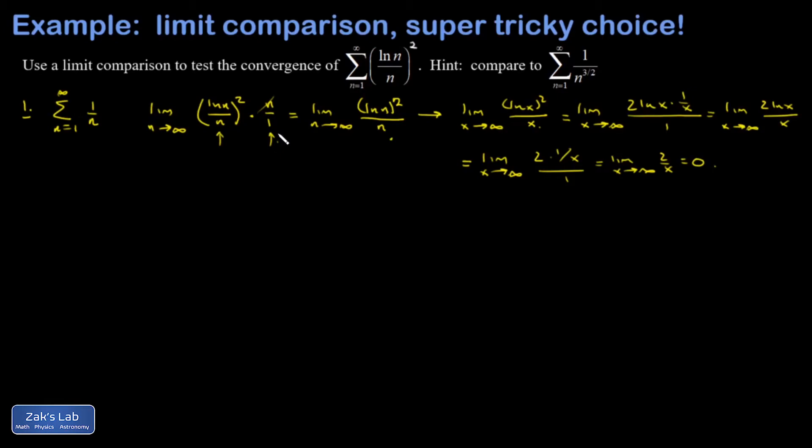This is essentially saying that the terms in our series are smaller than the terms in a divergent series. That doesn't tell us anything because being smaller than infinity doesn't necessarily mean it's a finite result. So this is an inconclusive limit comparison test.